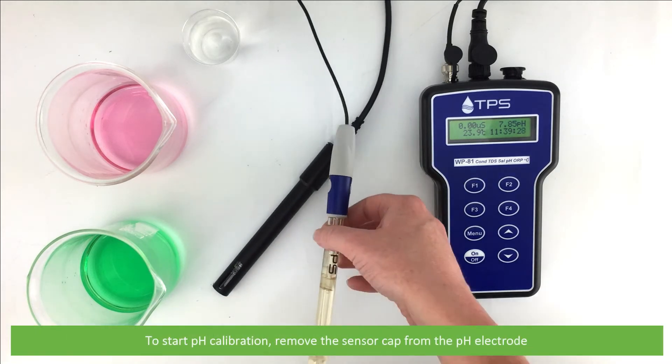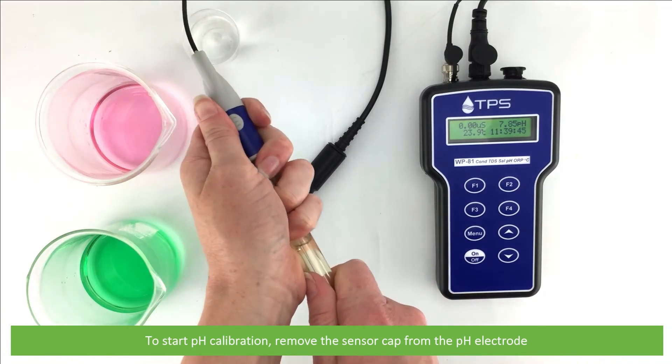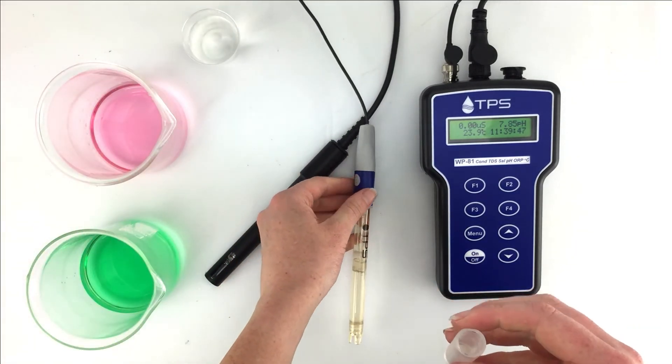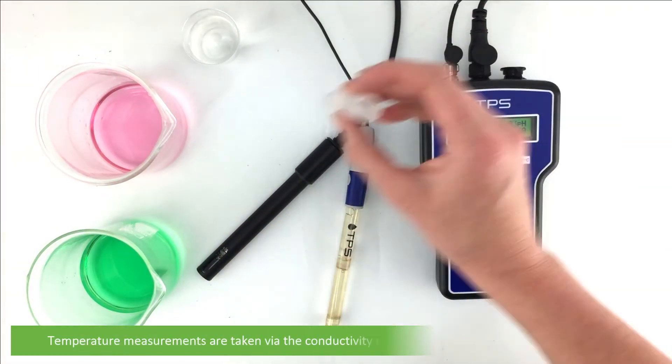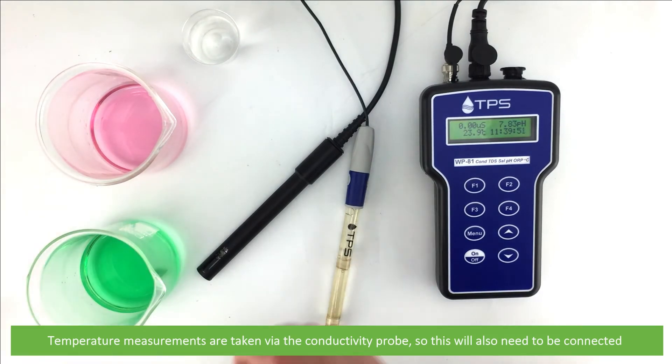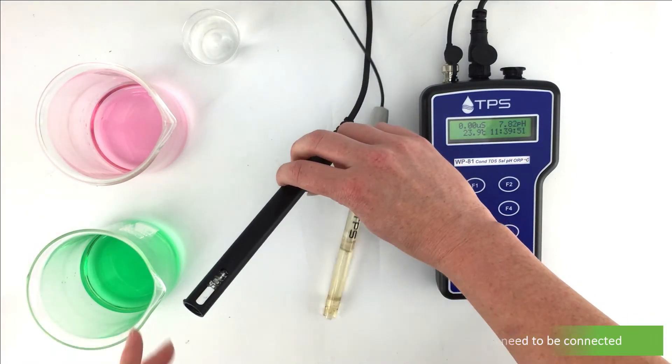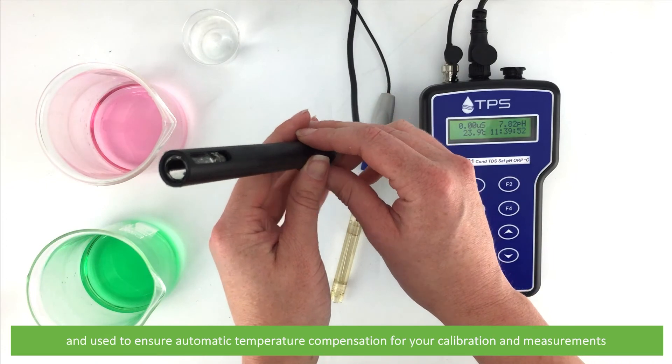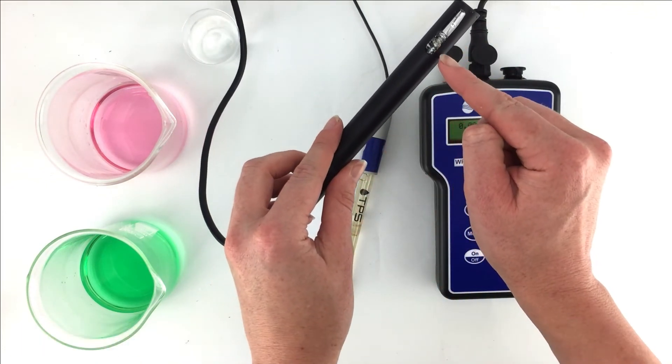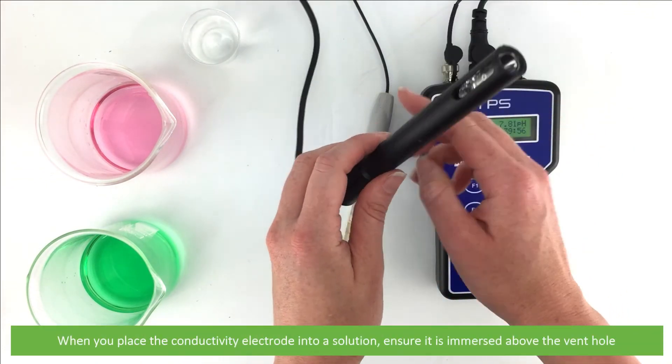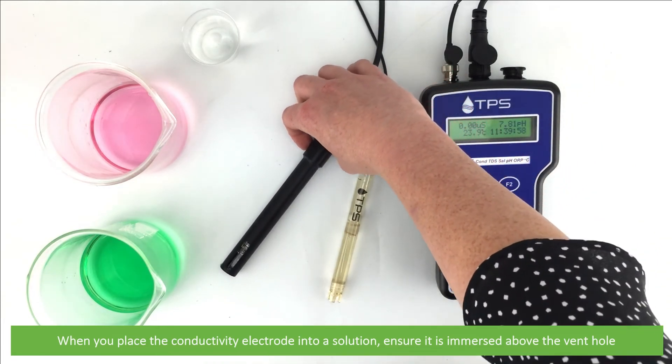To start pH calibration, remove the sensor cap from the pH electrode. Temperature measurements are taken via the conductivity probe, so this will also need to be connected and used to ensure automatic temperature compensation for your calibration. When you place the conductivity probe into standard solution, ensure it is immersed above the vent hole.